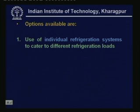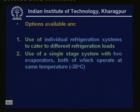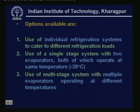The options available are: number one, use of individual refrigeration systems to cater to different refrigeration loads — meaning two individual systems, one for the very low temperature requirement and one for the high temperature requirement. The second alternative is to use a single-stage system with two evaporators both operating at the same temperature, i.e., minus 30°C. The third option is to use a multistage system with multiple evaporators operating at different temperatures.